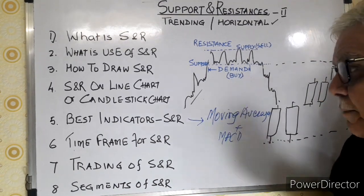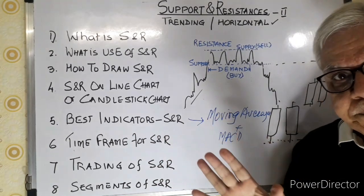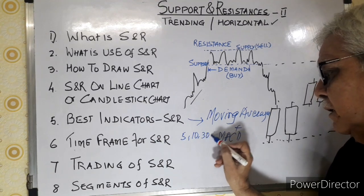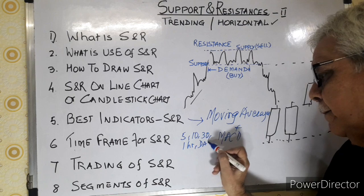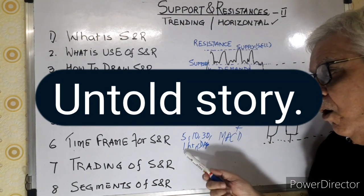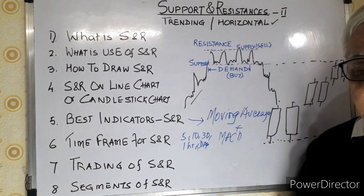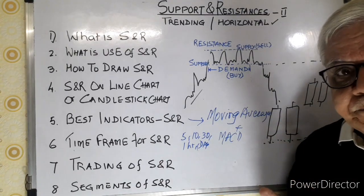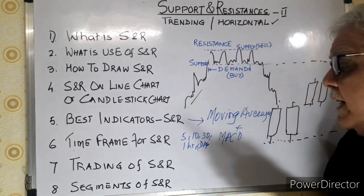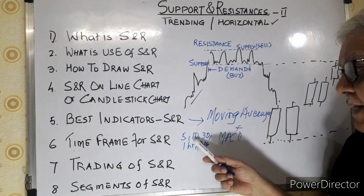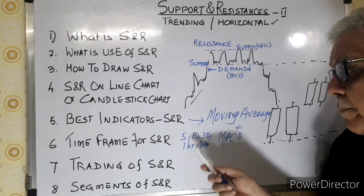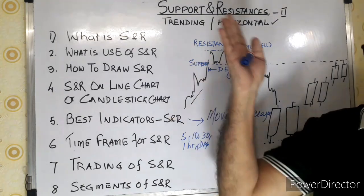The best indicator suited here is a moving average. It works for all time frames — whether 5 minutes, 10 minutes, 30 minutes, 1 hour, or 1 day. But if you want to earn money, the untold story is that you should use either the 30-minute candle or the 1-hour candle. For intraday, 5-minute candles have no standing of their own and your trades will be very frequent. 30-minute candles are very strong and give larger profits; 1-hour is even stronger.